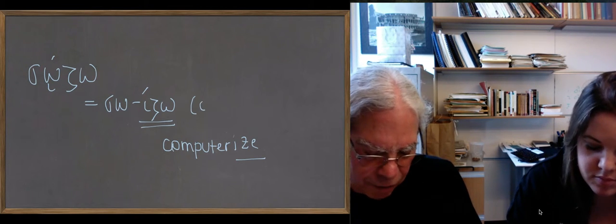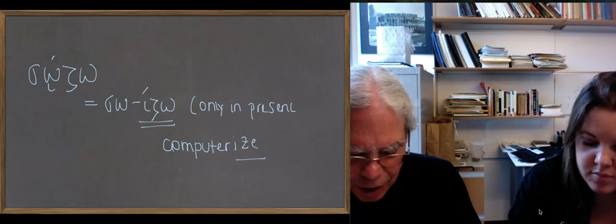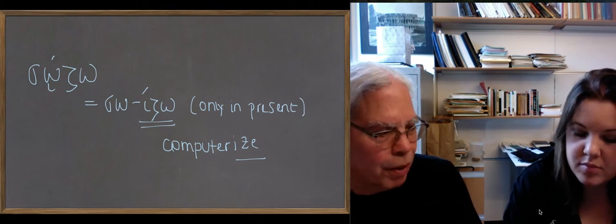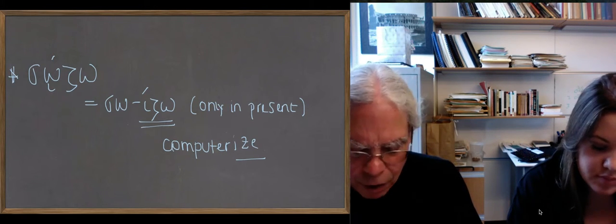But that -idzo suffix disappears outside of the present. Even the future doesn't have it. So it's sozo, no iota subscript, esosa, no iota subscript, sesoka, no iota subscript, and so forth. I think the principal parts are easy, and it means to save or preserve.